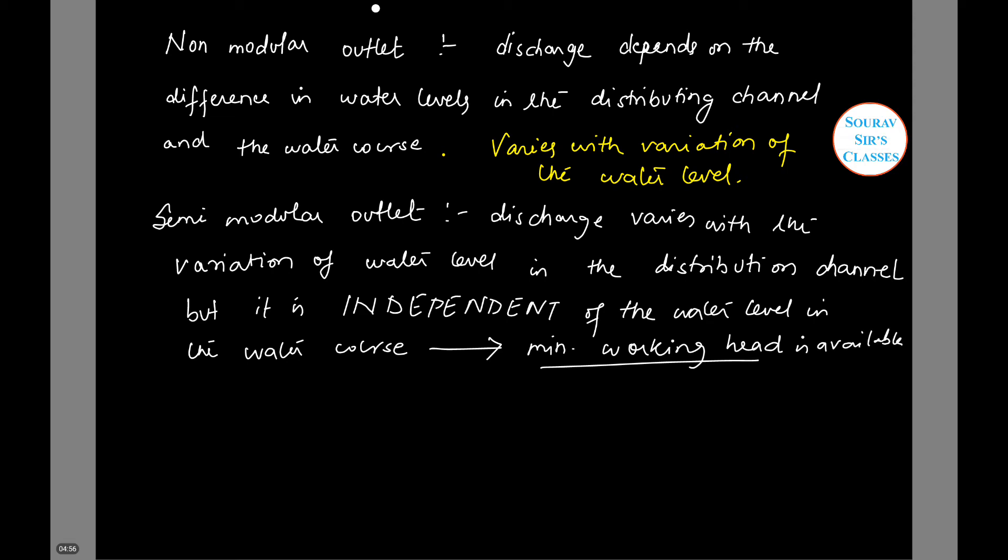And the last is the modular outlet. Now, modular outlet discharge is independent of the water level in both the supply canal and the receiving water course.